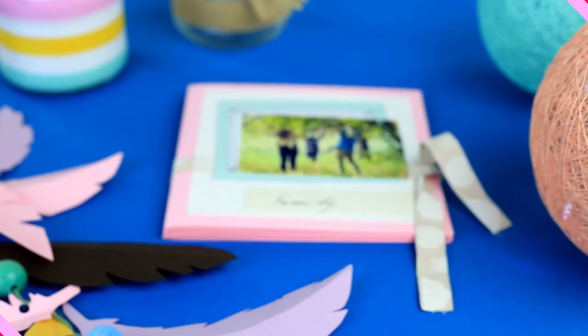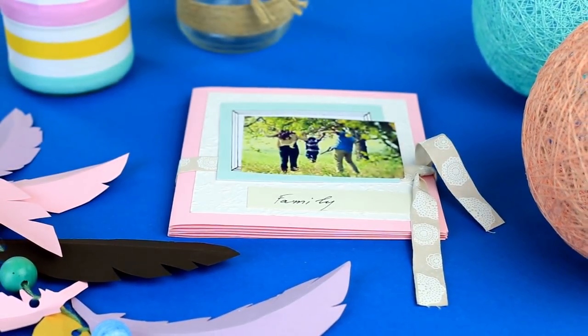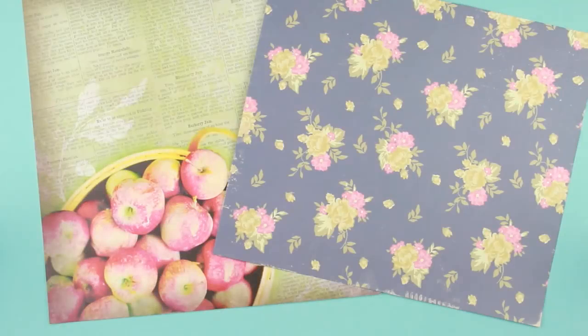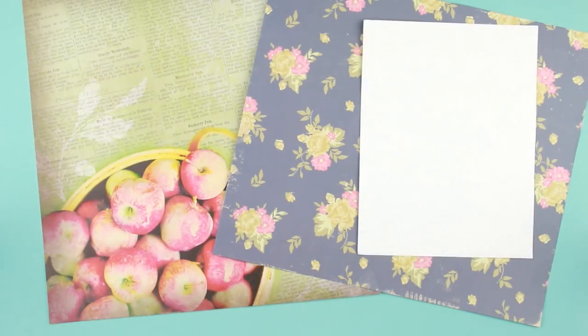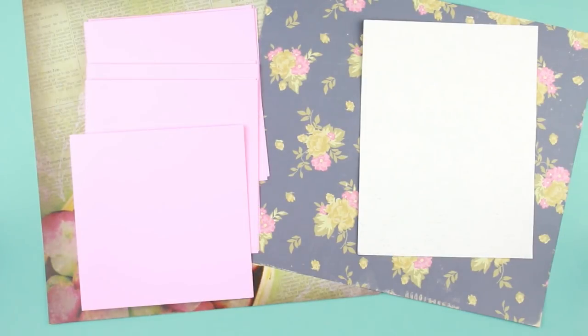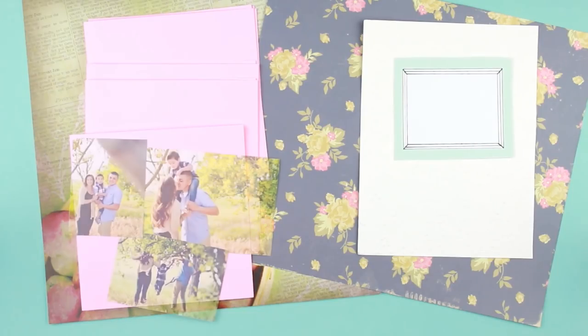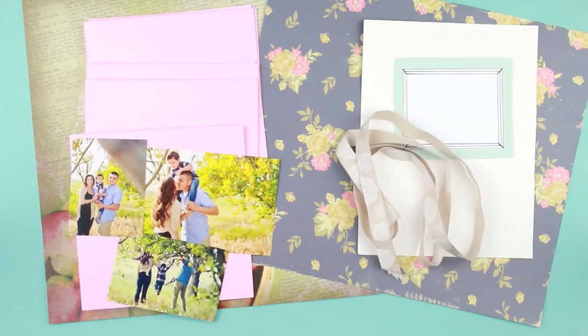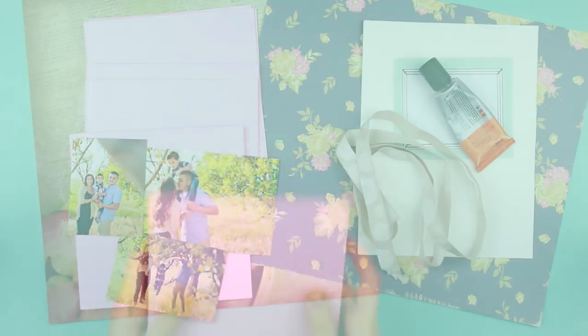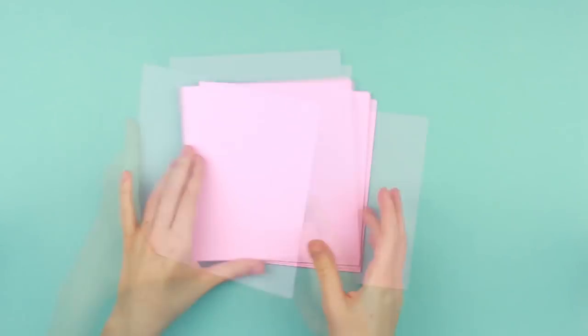In this video, we'll make a family scrapbook to keep photos and memories. We'll need patterned paper, white embossed cardstock, pink cardstock, frame print paper, family photos, ribbon, and multi-purpose glue. Take cardboard folded in half to make the pages.